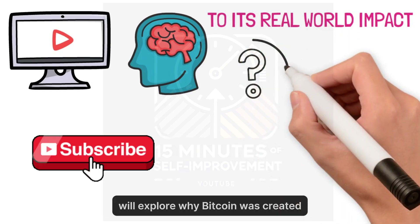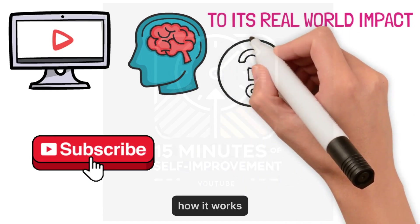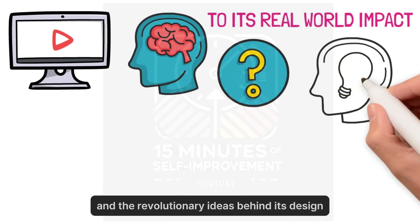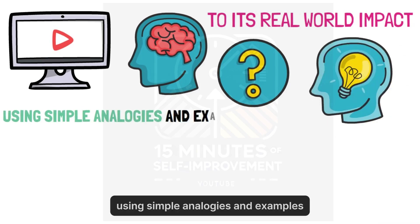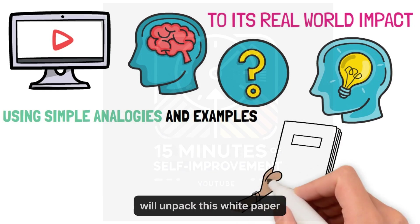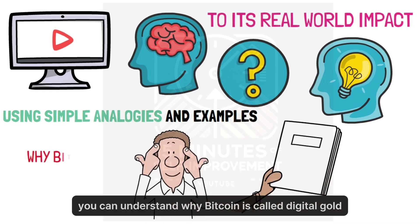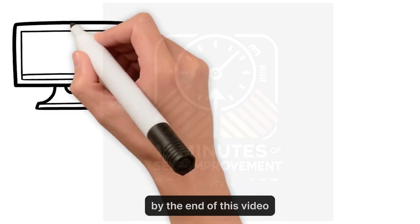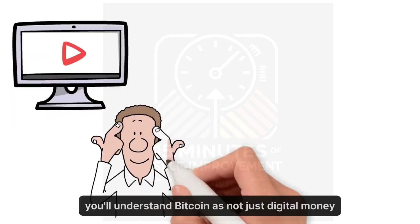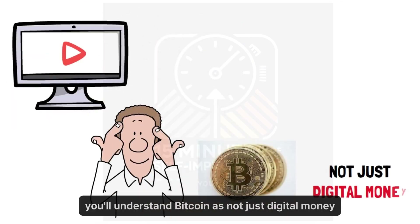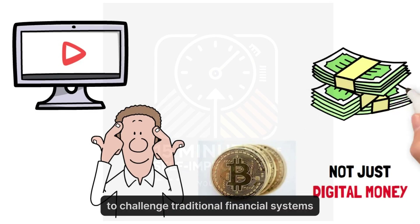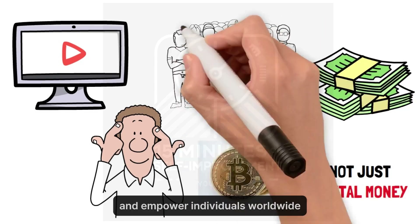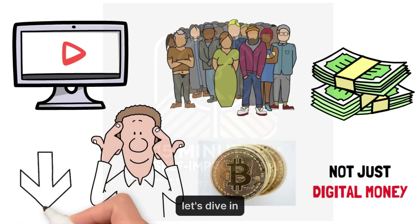We'll explore why Bitcoin was created, how it works, and the revolutionary ideas behind its design. Using simple analogies and examples, we'll unpack this white paper so you can understand why Bitcoin is called digital gold. By the end of this video, you'll understand Bitcoin as not just digital money, but as a tool to challenge traditional financial systems and empower individuals worldwide. Let's dive in.